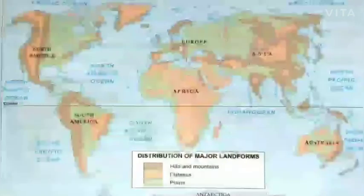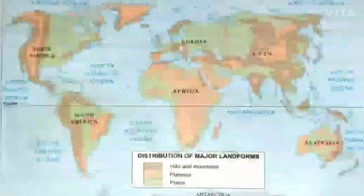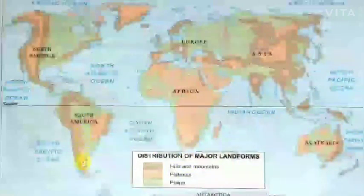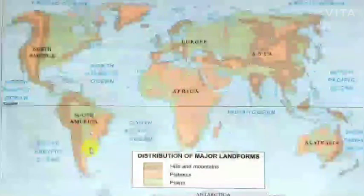Before moving to the next topic — mountains and the terms related to mountains in the next video — let us have a look at a map showing the distribution of major landforms all over the world. As you can see in this world map, this map is already given in your book on page number 139 — do go through it, it is very important. This map shows how major landforms are distributed all over the world: mountains are denoted by dark brown color, plateaus by light blue color, and plains by green color.